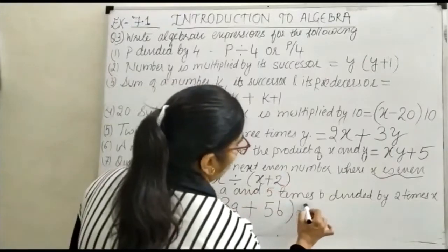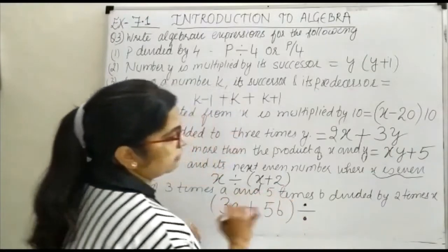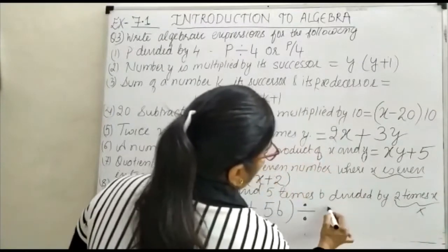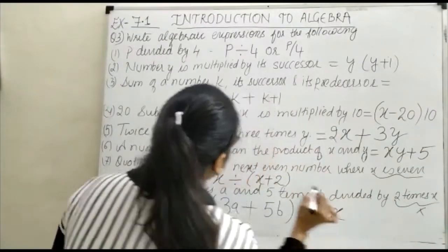Divided by - this is the division symbol. Divide by what? 2 times x. 2 times x - times means multiply, so it becomes 2x.